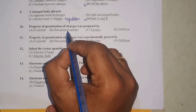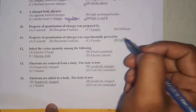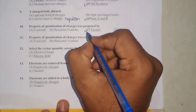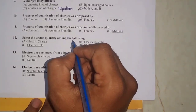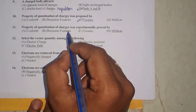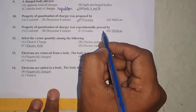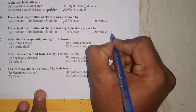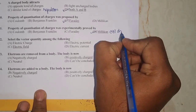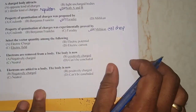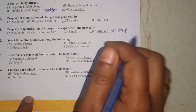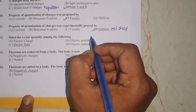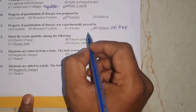Question number 10: the property of quantization of charges was proposed by Faraday — Michael Faraday. Question number 11: the property of quantization of charges was experimentally proved by Millikan. You would have heard about the Millikan oil drop experiment; from that experiment's conclusion, he gave that charges are quantized, meaning they are multiples of the charge on the electron.